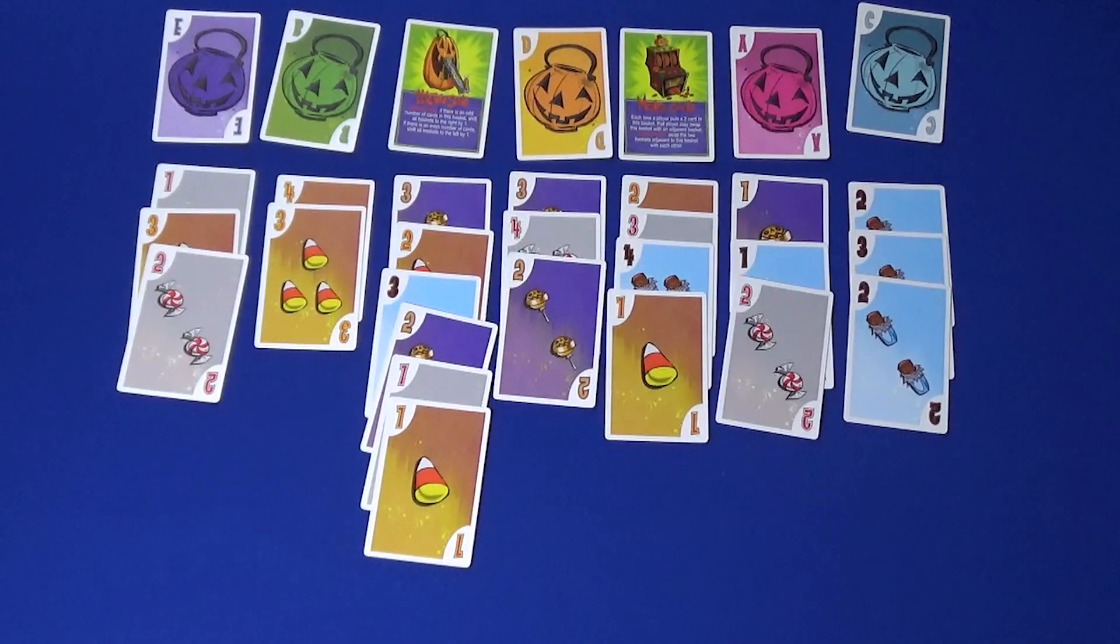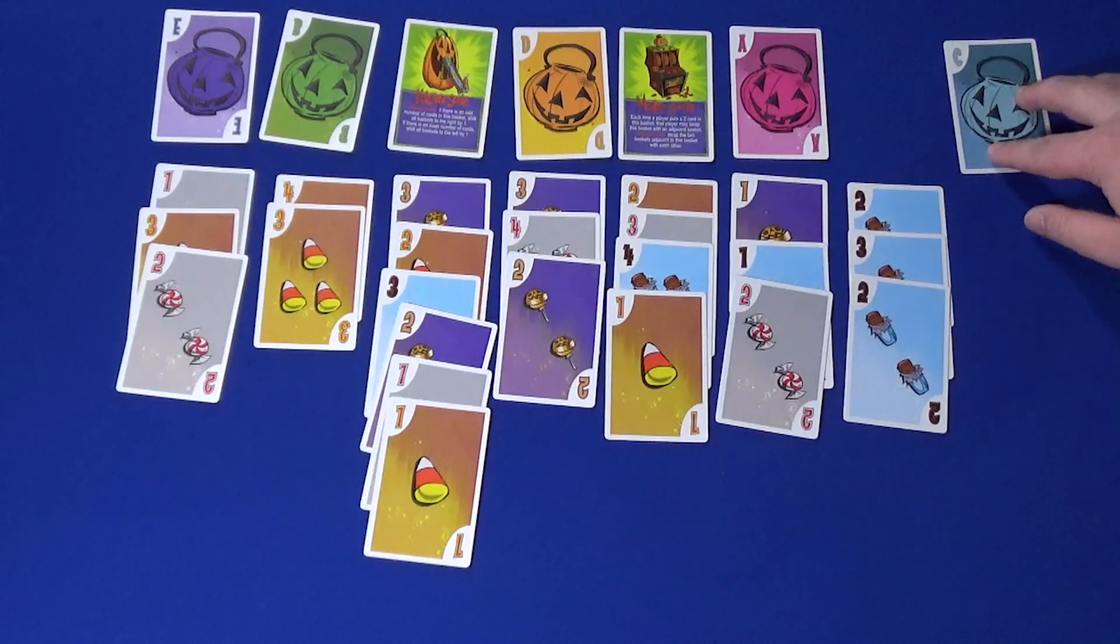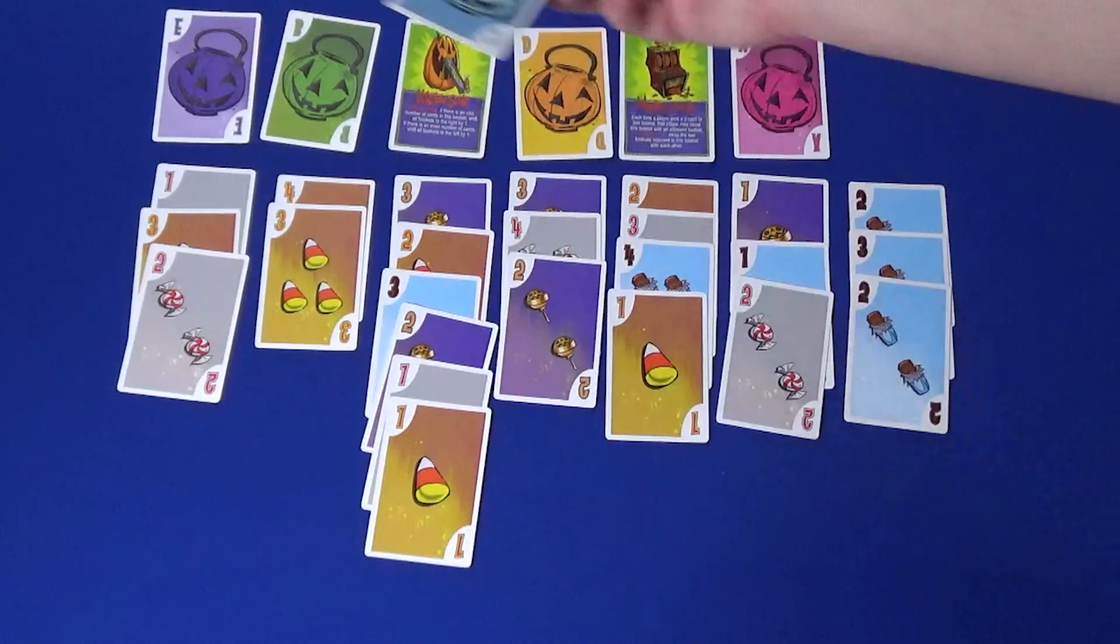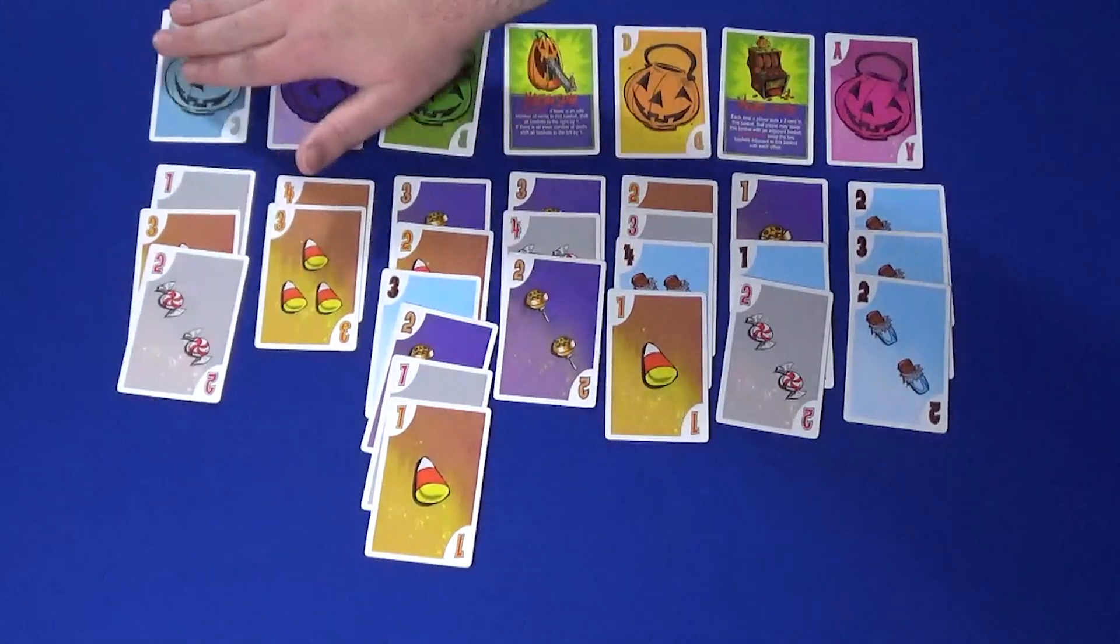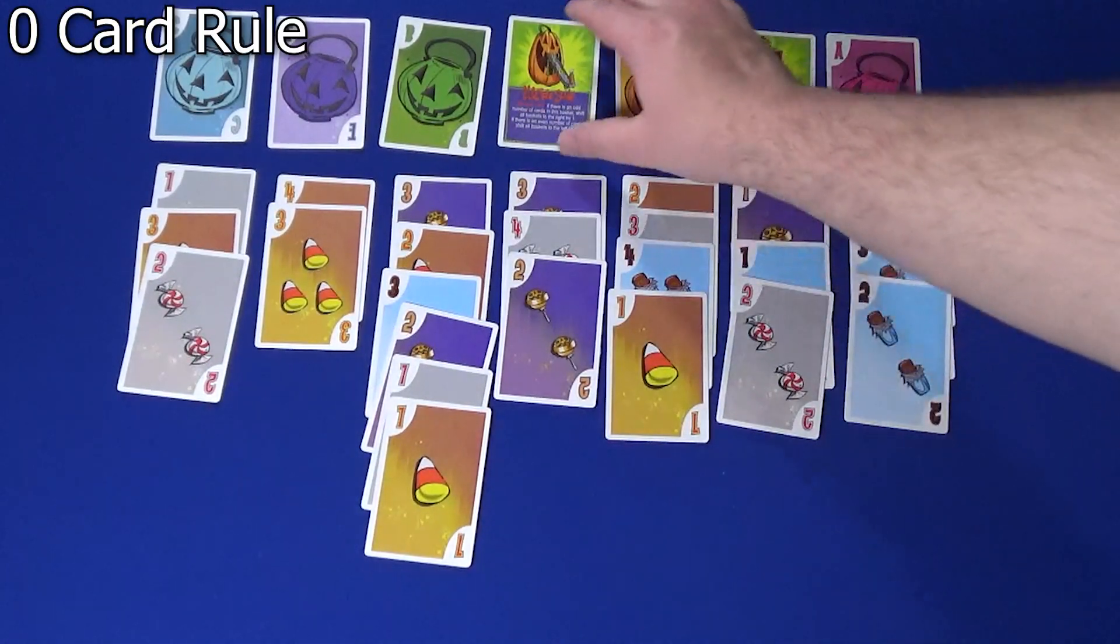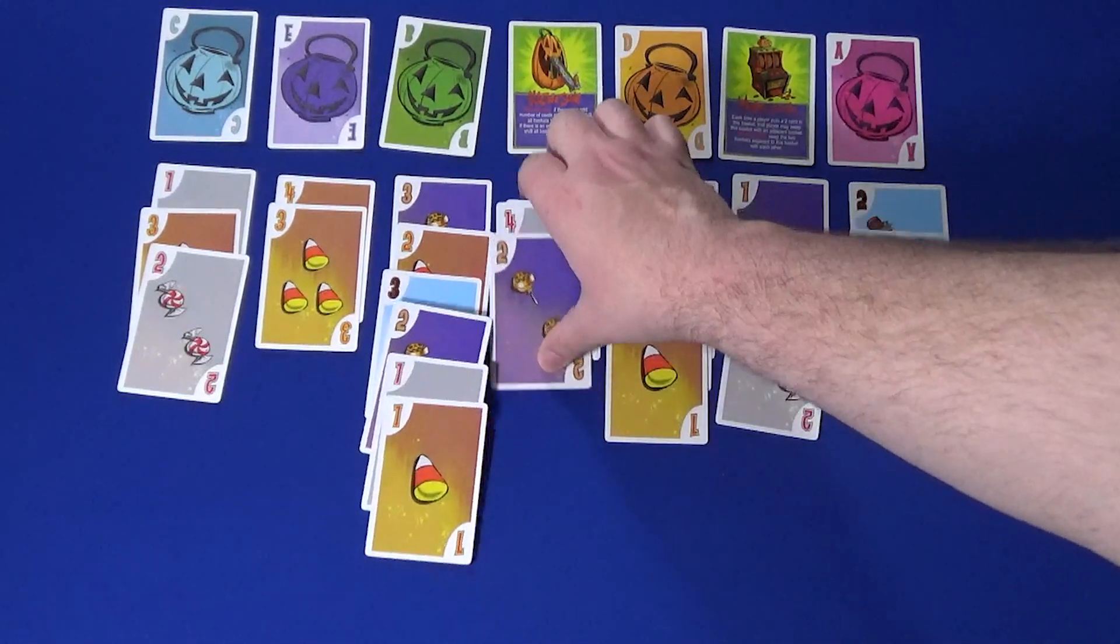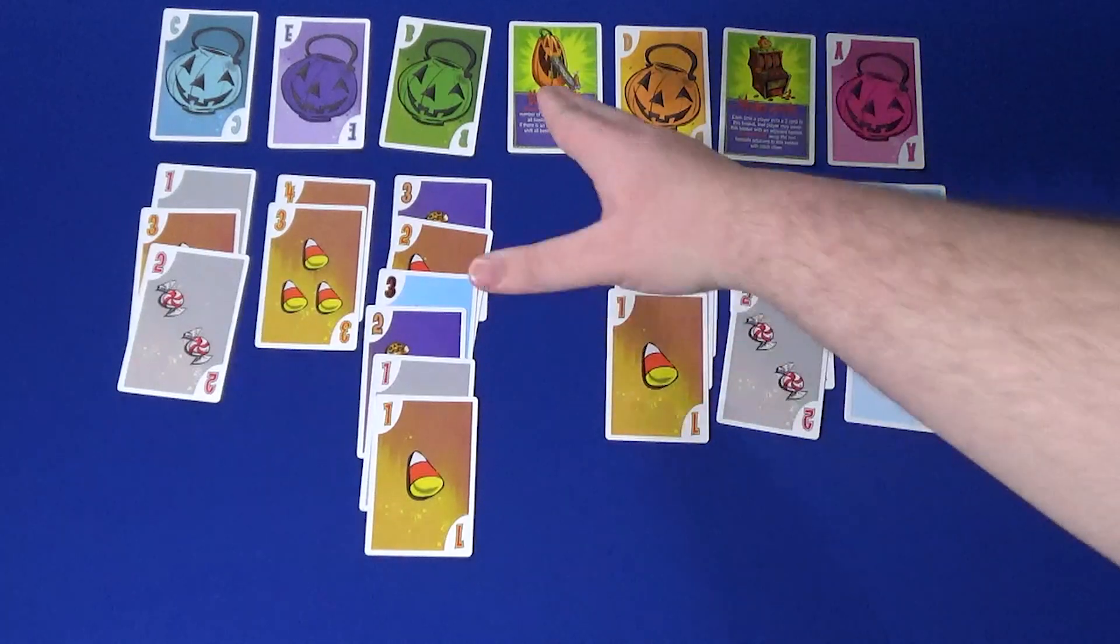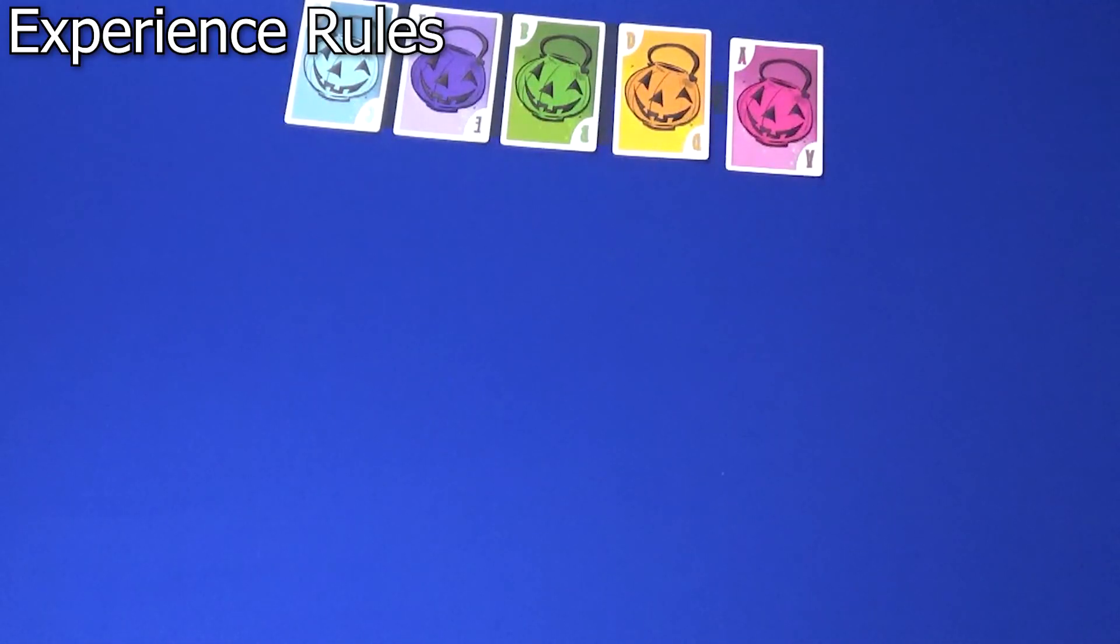It also means that if for any reason a basket is to be shifted past the end of the line, it will then go to the first position on the opposite end of the line. Some baskets like Electric Slide will call for odd or even numbers of cards in the basket. If at the end of the game there are no cards in those baskets, then those baskets have no effect.